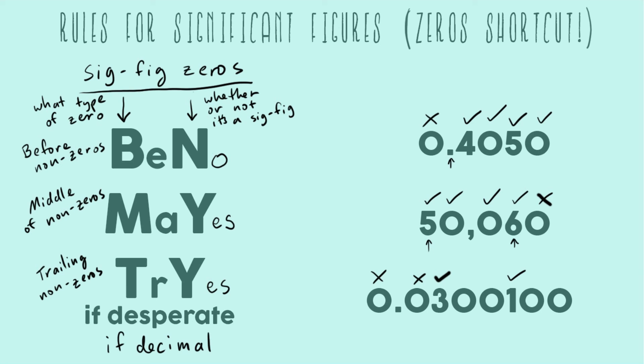Our next two zeros they are in the middle. So in the may. Yes they are always sig figs. And now we have our two trailing zeros after everything happened. And so in this case yes there is a decimal. So it means that yes these two will be sig figs.